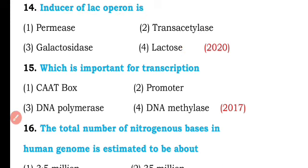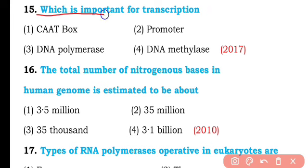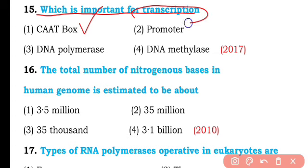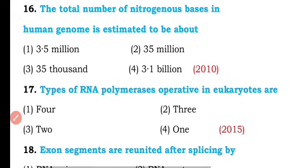Question number fifteen. Which is important for transcription: CAAT box, promoter, DNA polymerase, or DNA methylase? So the correct answer is option one — the CAAT box is a promoter sequence that is important for transcription.